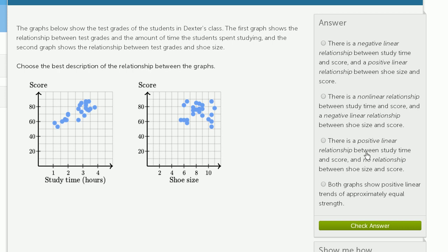There is a positive linear relationship between study time and score, and no relationship between shoe size and score. That's right, I'm going with that one. Both graphs show positive linear trends of approximately equal strength? No, not at all - this one doesn't show a linear relationship of any strength.